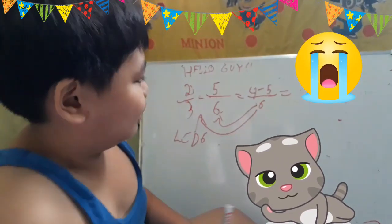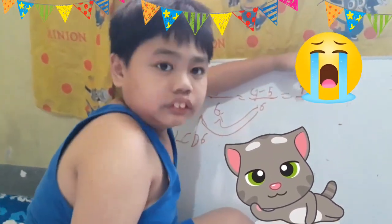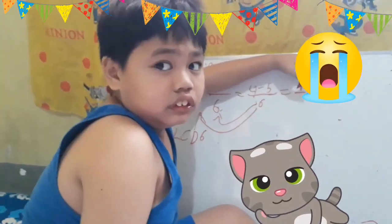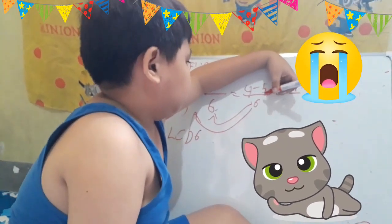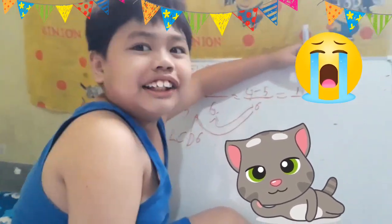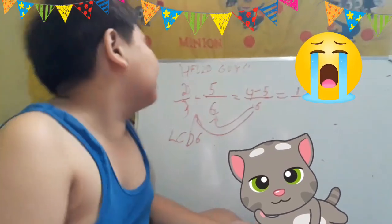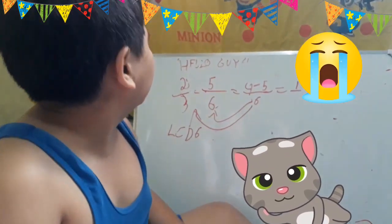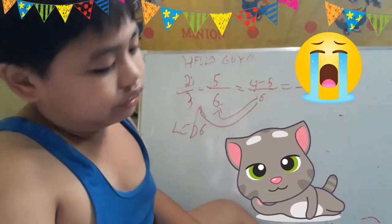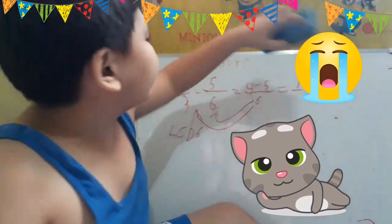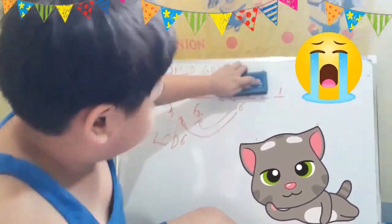Four minus five is one. You write one. And the sign is negative. Oh, you write negative first, then number. The proper way to write with the sign — wait, let's check again because this may be wrong. Can you recheck again, Justin?